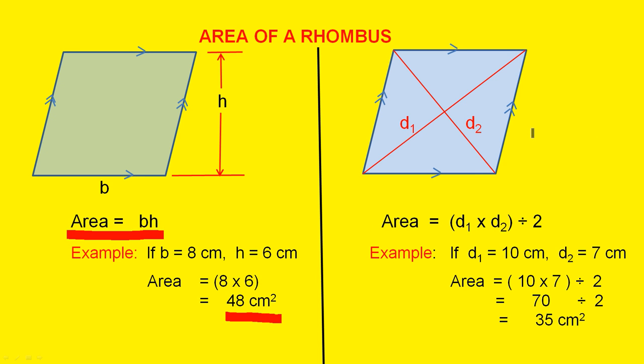Now another way of finding the area of a rhombus. If you are given the length of the two diagonals, here they are, the two diagonals of the rhombus. Another way of finding the area is you multiply the two diagonals together and divide by 2.